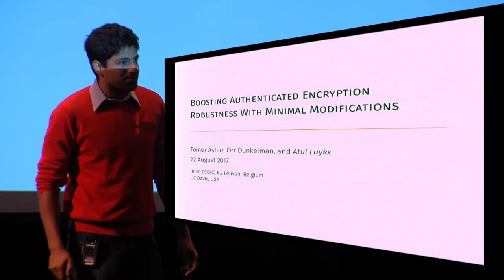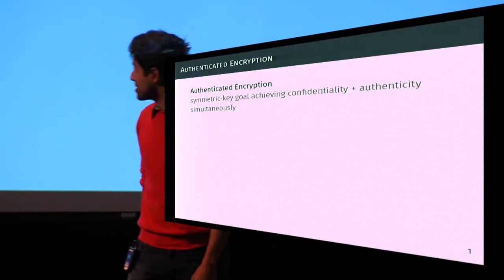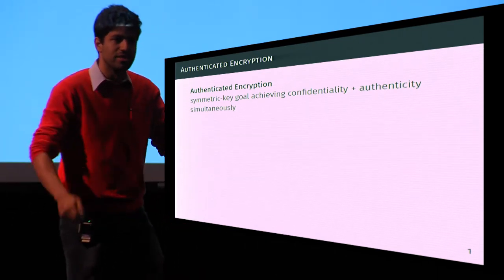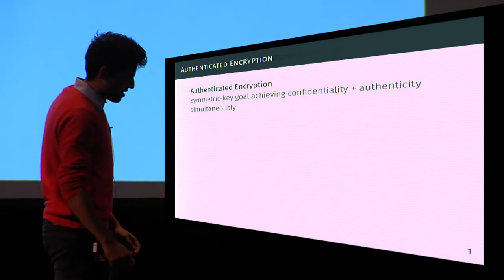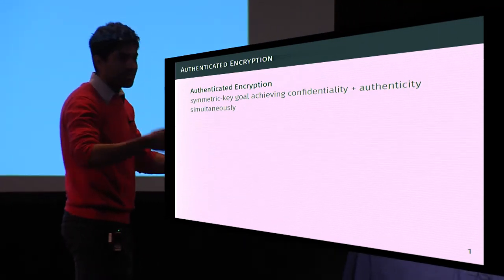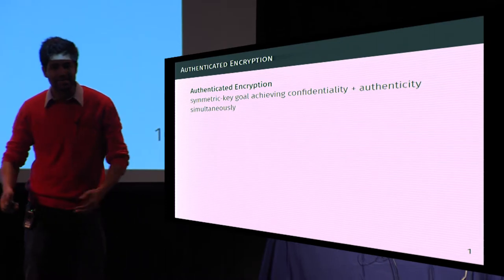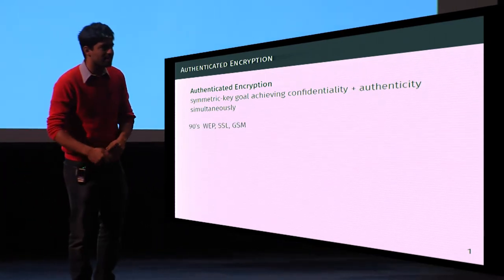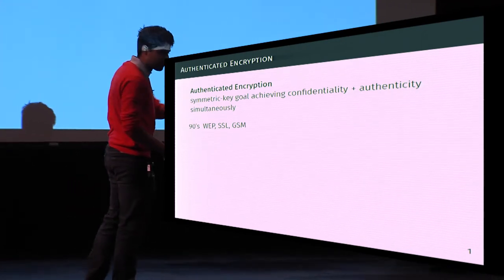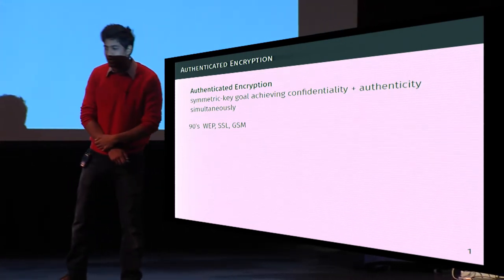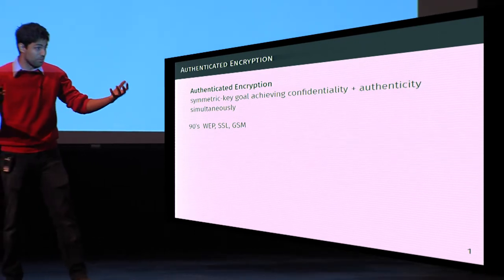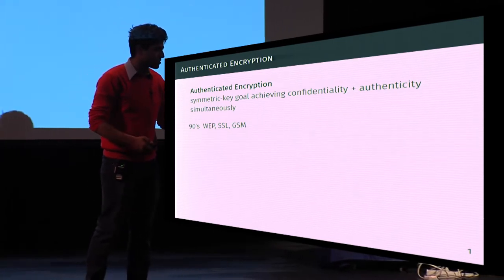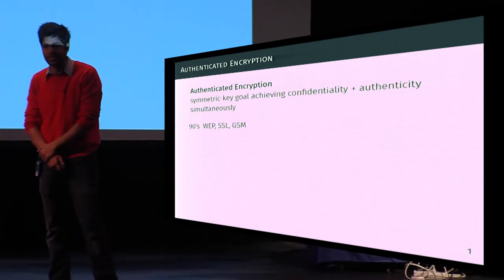Authenticated encryption is one of the success stories of cryptography in creating a dialogue between theory and practice. It's characterized by repeated interaction among academia, industry, and standards bodies. Already in the 90s, you had technologies like the Web, SSL, and GSM trying to combine encryption and authenticity algorithms to achieve security, with varying degrees of success.